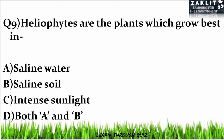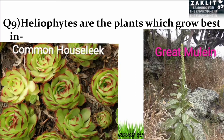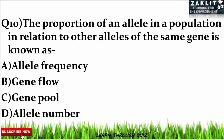The ninth question was: heliophytes are plants which grow in which kind of situation? The correct option is C — intense sunlight. Plants like common houseleek and great mullein are adapted to grow in intense sunlight.